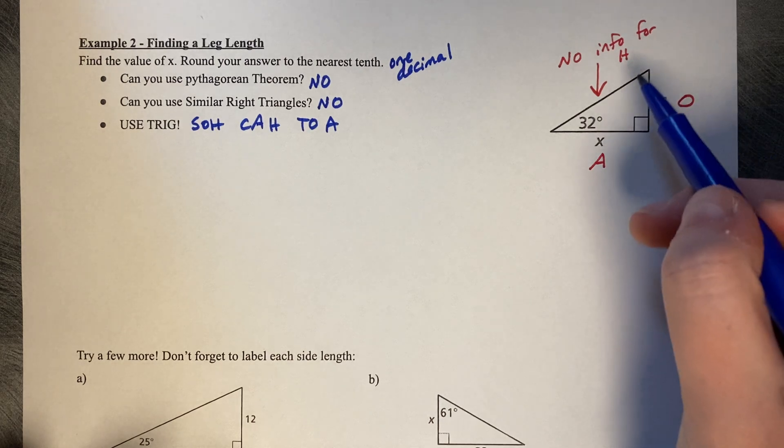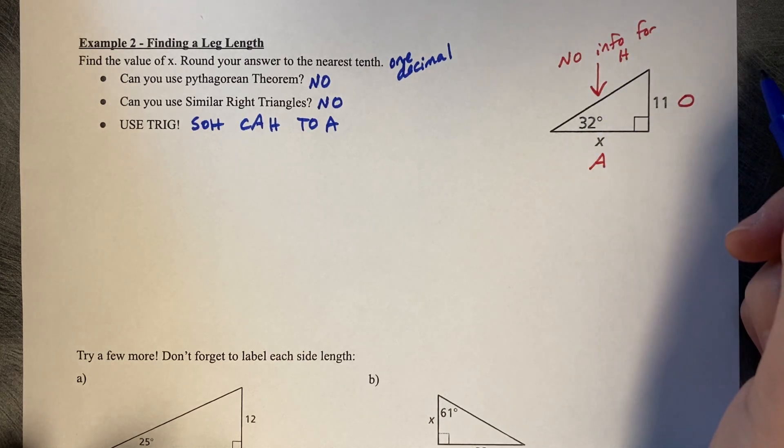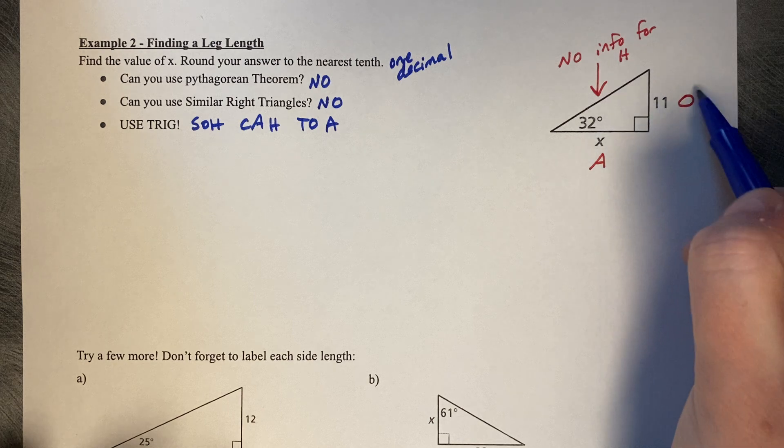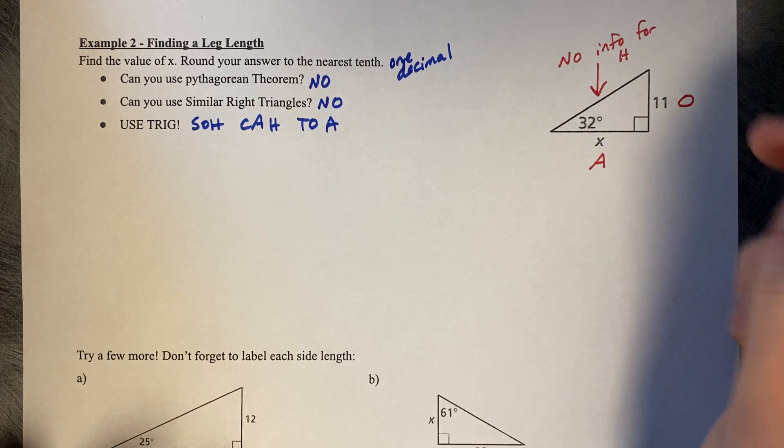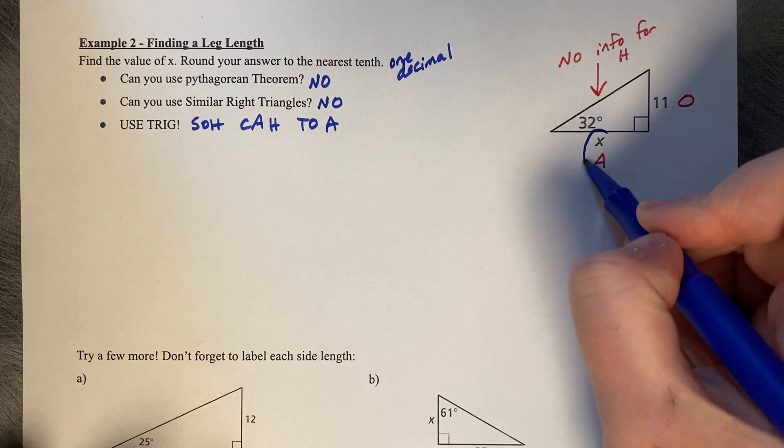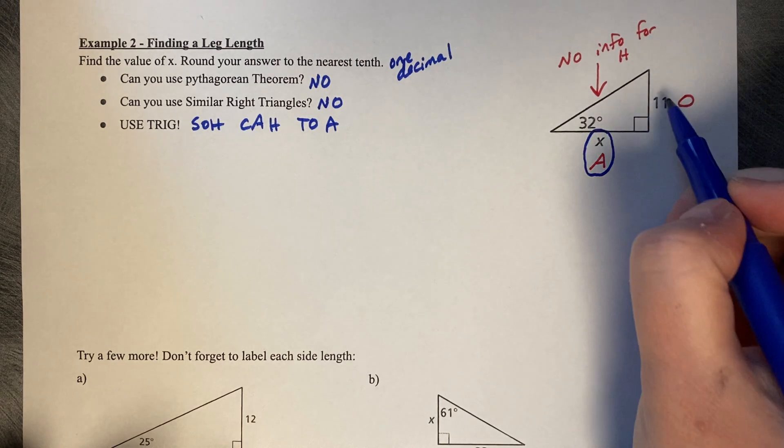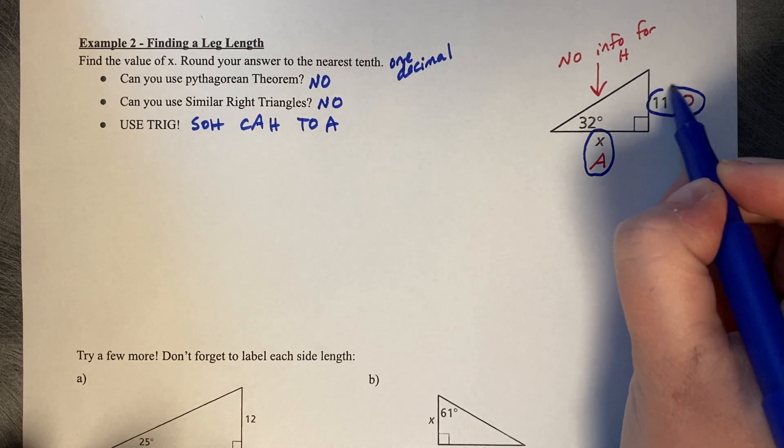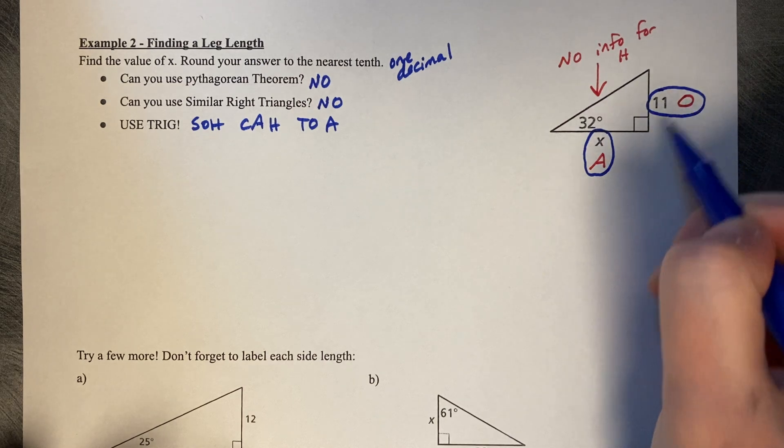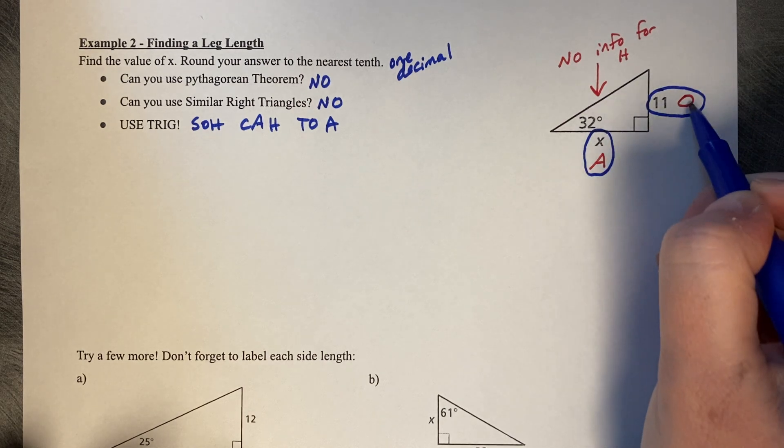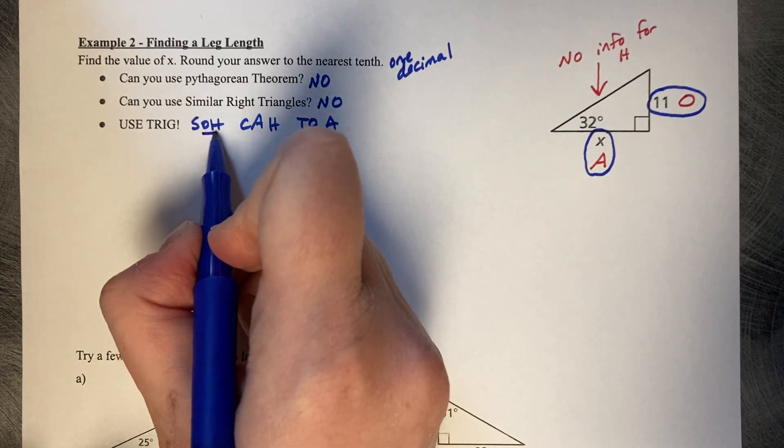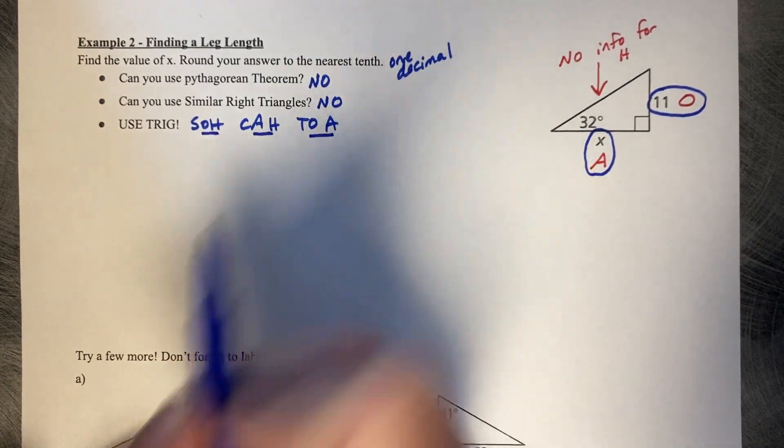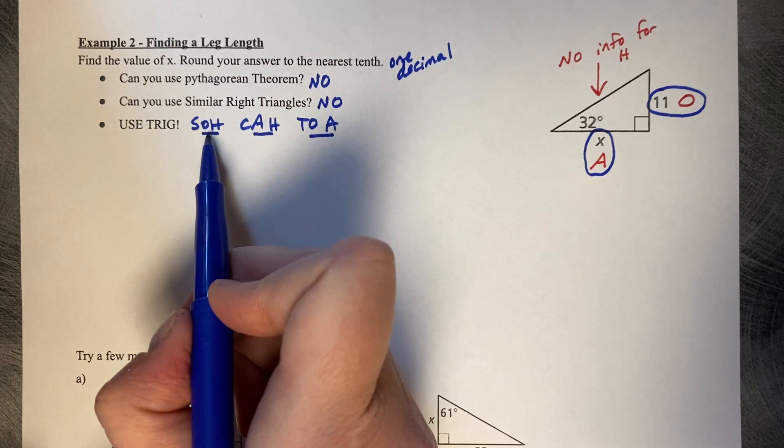The two side lengths we're interested in: I have no information for h, but I do know something about my opposite, and I want my adjacent. X is my adjacent, 11 is my O. Take a look at the two letters we're working with: an A and an O.